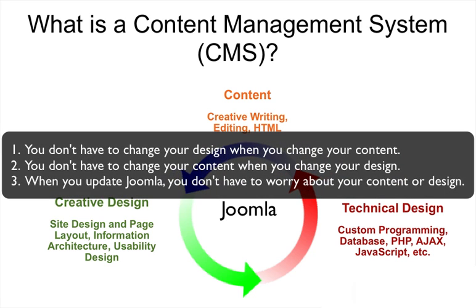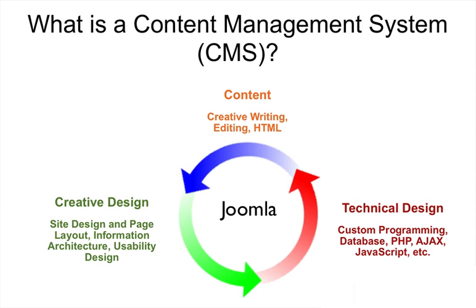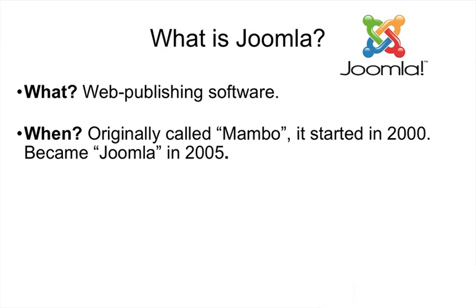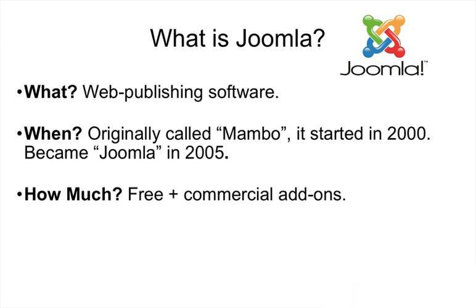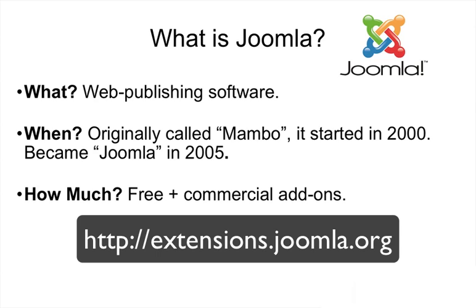The advantages are endless. You don't have to change your design when you change your content, and vice versa. When you update the software that runs your website, it does so without changing either of the others. A CMS gives you incredible flexibility in your web design. At its most basic level, Joomla is web publishing software. Joomla started off as Mambo in 2000, and in 2005 a group of developers left the Mambo project and began Joomla. It quickly superseded Mambo. As of around September 2008, there were over a million users in the Joomla forums, millions of downloads, and thousands of extensions. Joomla is free — you can download it as many times as you want, install it anywhere, and it will never cost you a penny. There are thousands of free extensions as well.